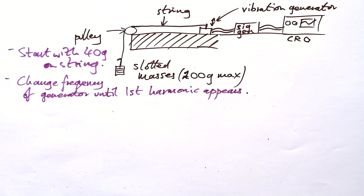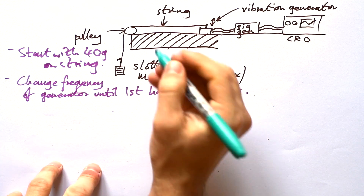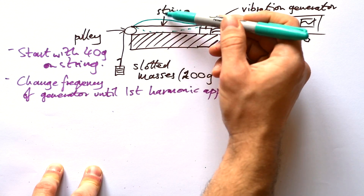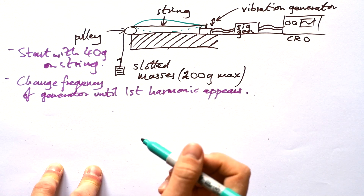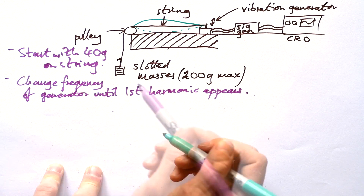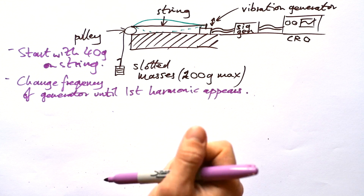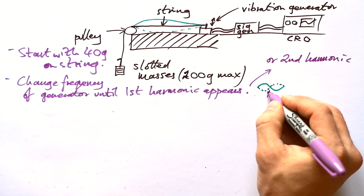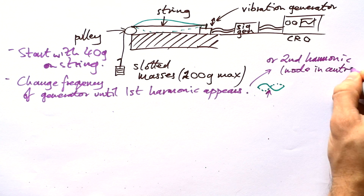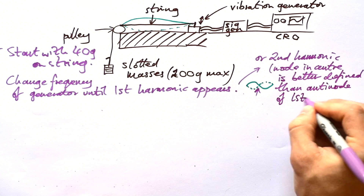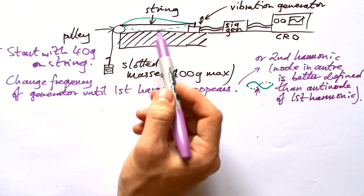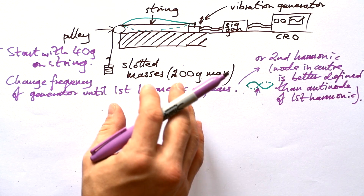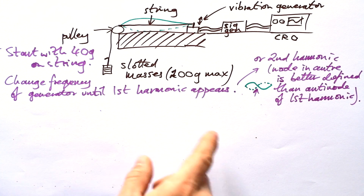What does the first harmonic look like? It's just one big loop — the string oscillates with a large amplitude in the middle and no amplitude at the ends. Now, if you were answering this as an exam question, go for the first harmonic. Personally, I prefer the second harmonic because the node in the middle is either there or it isn't, whereas for the first harmonic there's a range of frequencies over which it might appear. But for an exam question, just go with the first harmonic.